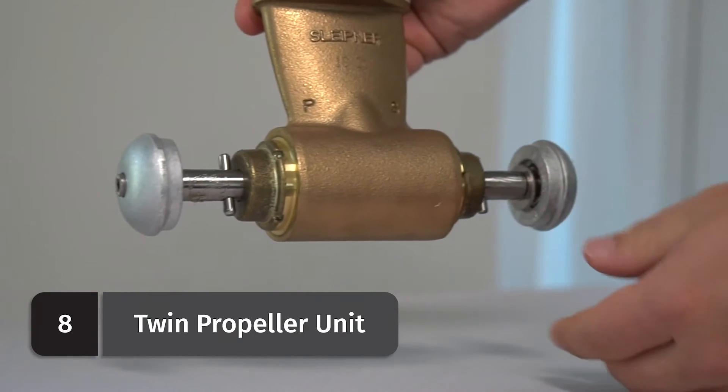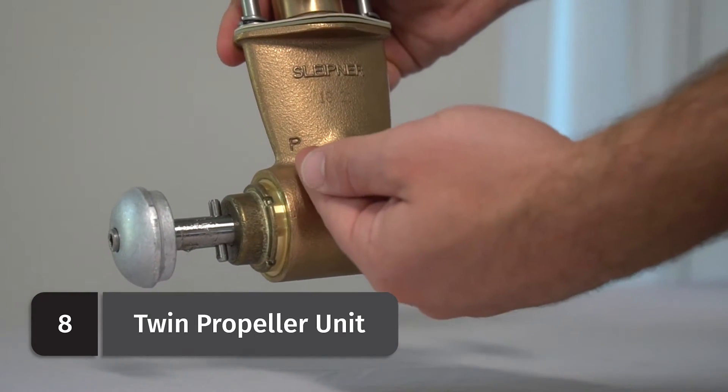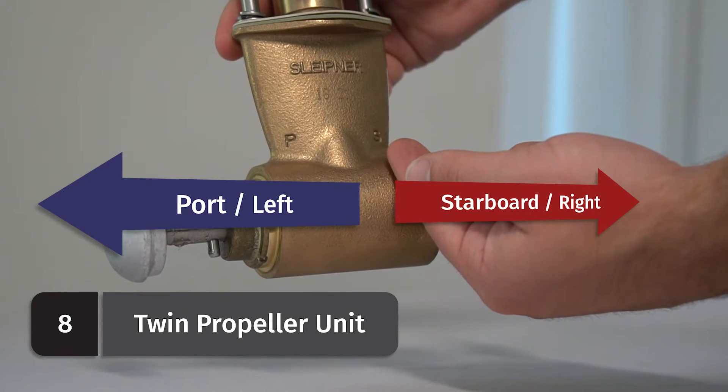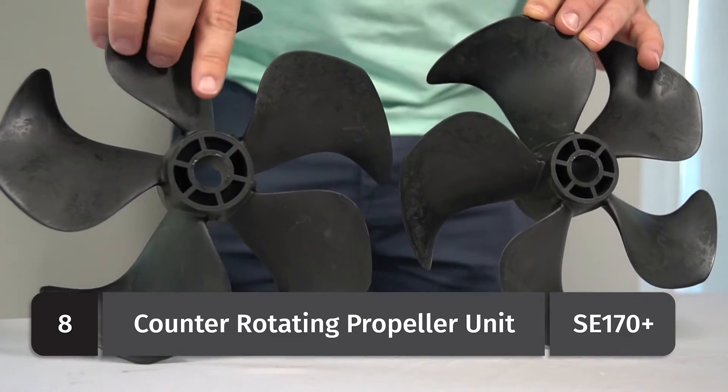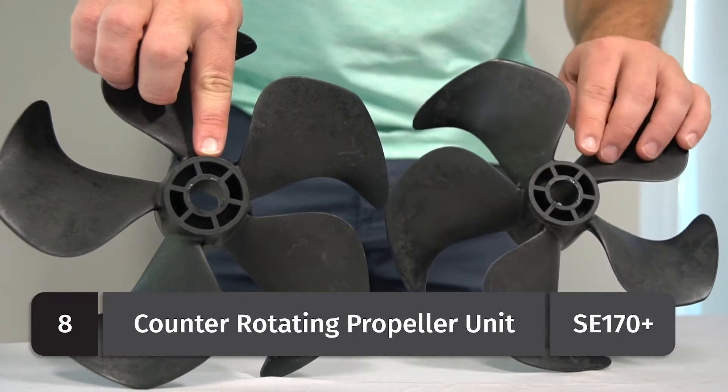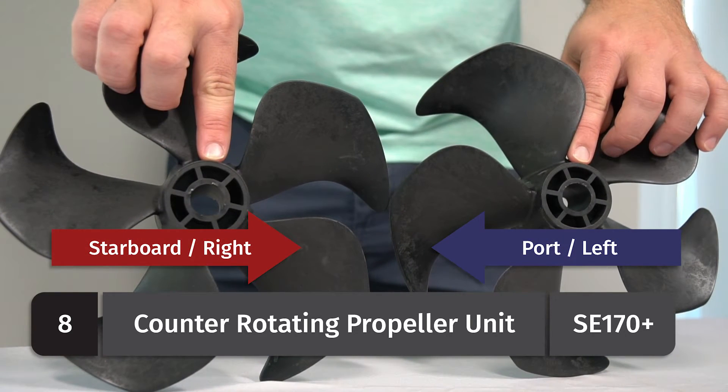On all of the twin propeller units, the gear leg is marked on one side with a P and an S for port and starboard. And if you have counter-rotating props, which means the props are left-handed and right-handed, which would be every model from an SE170 and larger, be sure to install the left-hand prop on the port side and the right-hand prop on the starboard side.